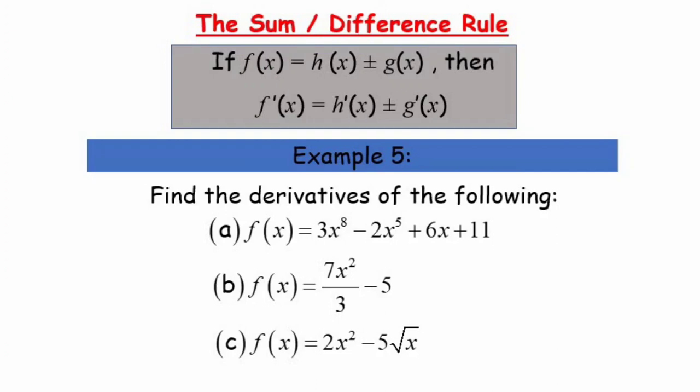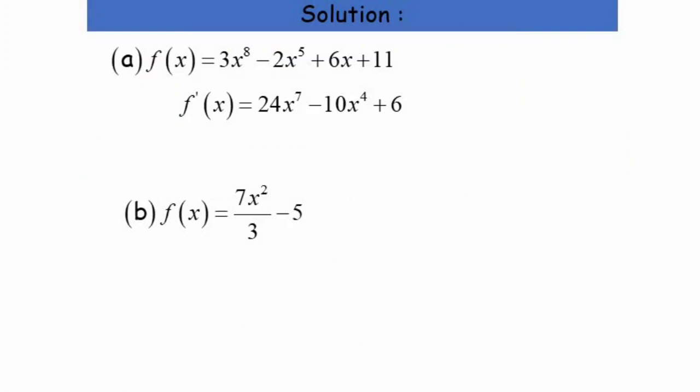Now let's look at the sum or difference rule. This rule states that if f(x) = h(x) ± g(x), then f'(x) = h'(x) ± g'(x). Let's look at a few questions — we have three questions to solve and we'll start with part a.